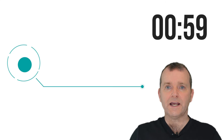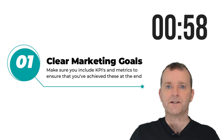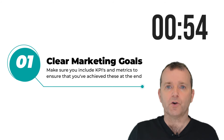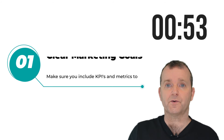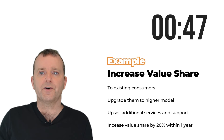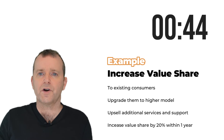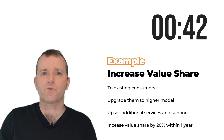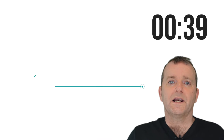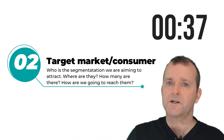So let's look at the five things you need to put in a marketing plan. Number one: you need to have clear marketing goals, objectives, and measurements to check that you've achieved those. For example: let's increase value share by selling more of the product that we currently do to existing consumers, and we're going to increase our value share by twenty percent within a year.